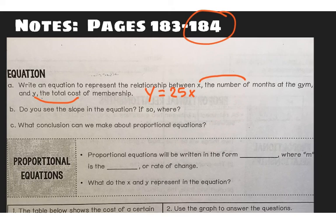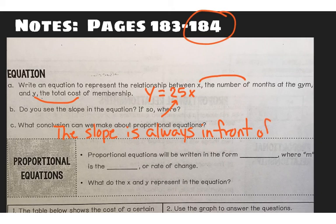But do you see the slope in this equation? And if so, where? And yes, we can see it right there. 25 is the same slope that we got on both the table and the graph and that's where we would see it in an equation. So what conclusion can we make about proportional equations? The slope is always in front of x. So this is a common question. I would give you this equation and I would say tell me what the slope is and all you would have to answer is 25 because you know this rule that the slope will be right in front of x. That is the slope.